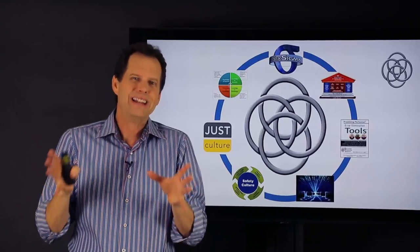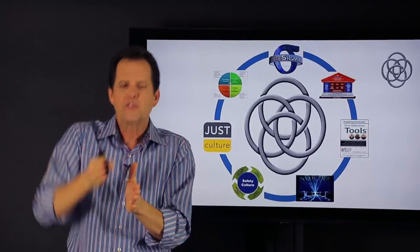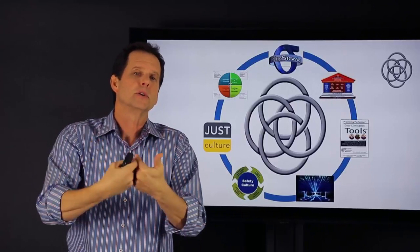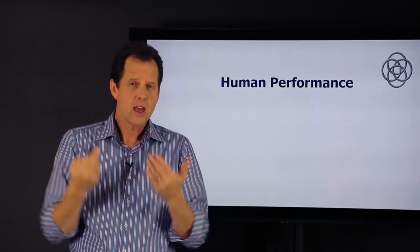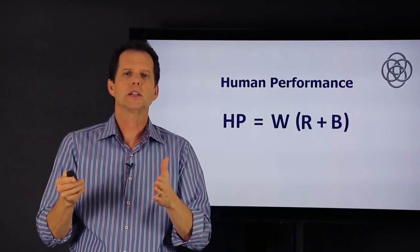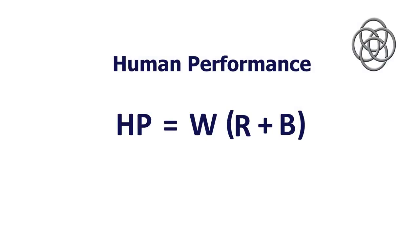So finally, what is human performance? And how can you focus on it properly to improve performance in your organization? Well, there's a very simple definition, a next level definition, which highlights the elements of human performance. This definition is HP equals W times R plus B.